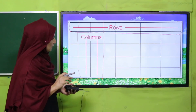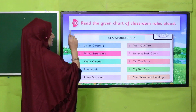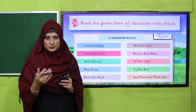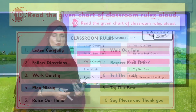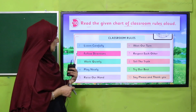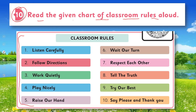Now we are moving towards an activity. On Question Number 10 in your book, you can find a chart of classroom rules. You have to read this chart aloud — there are 10 sentences. Read it one by one in your class and try to understand what manners and rules this chart is giving you. Pause the video and perform this activity. Welcome back! I hope you have learned how to behave in your class.